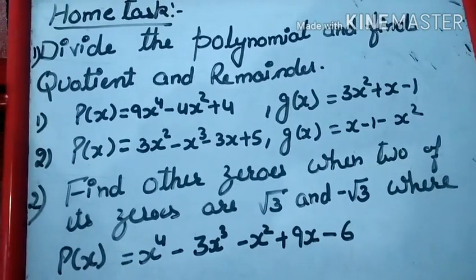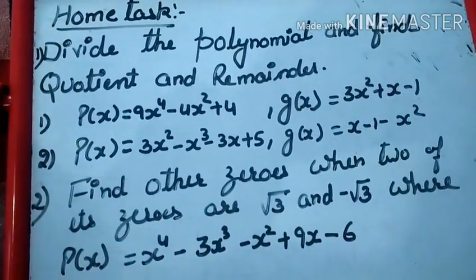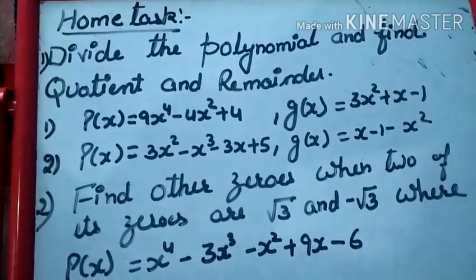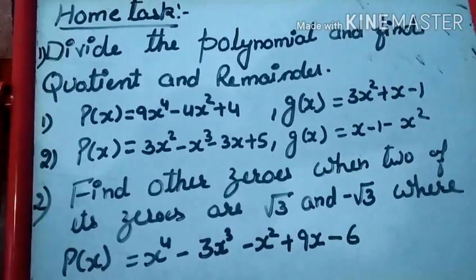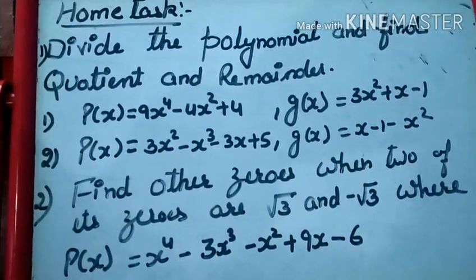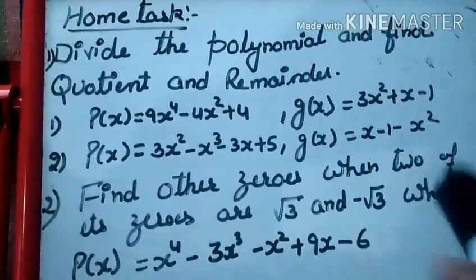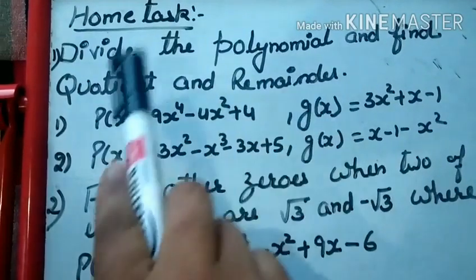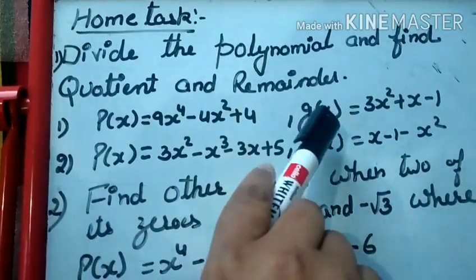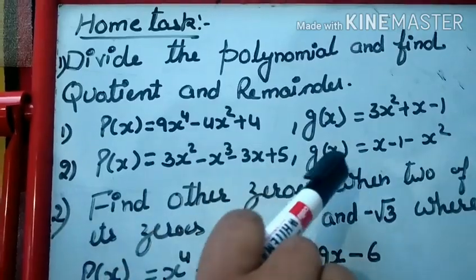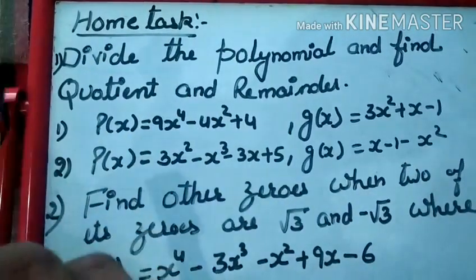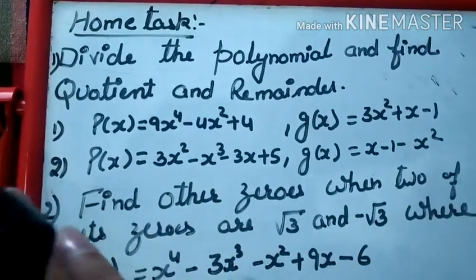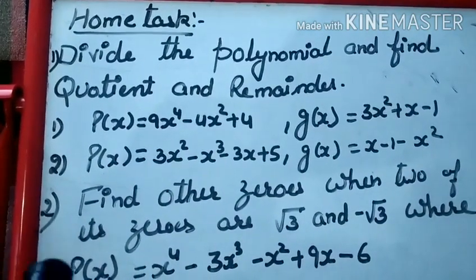Now students, it's time for your home task. In Part 1 we learned how to find the quotient and remainder. In Part 2 we learned how to find other zeros when two of its zeros are given. Your home task is: divide the polynomial and find the quotient and remainder — p(x) and g(x) are given. In the second part, p(x) and g(x) are also given.